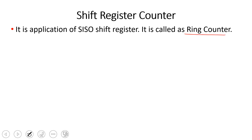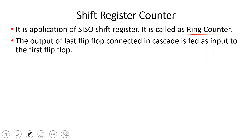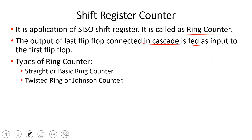The ring counter is a group of flip-flops connected in cascade — in series. The output of the last flip-flop connected in cascade is fed as an input to the first flip-flop. That is the basic ring counter. The twisted or Johnson counter works similarly.